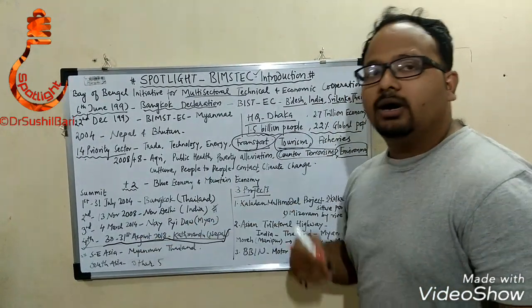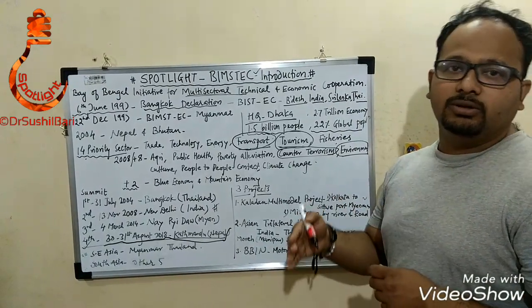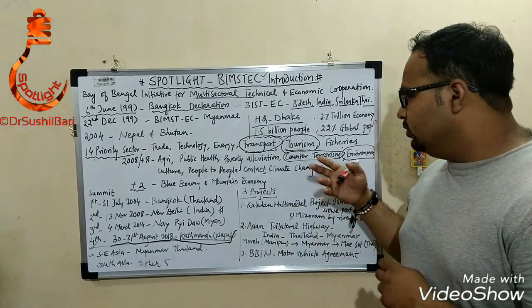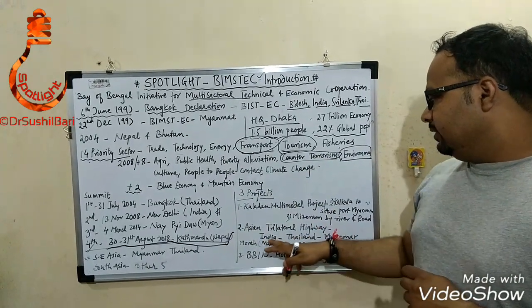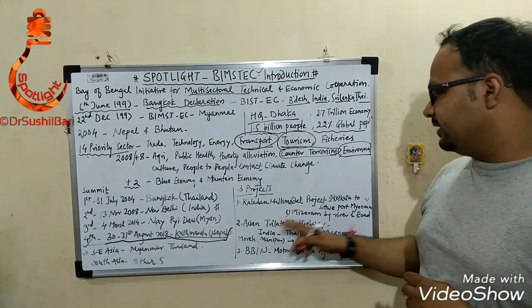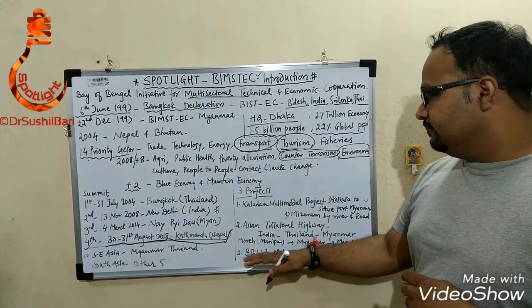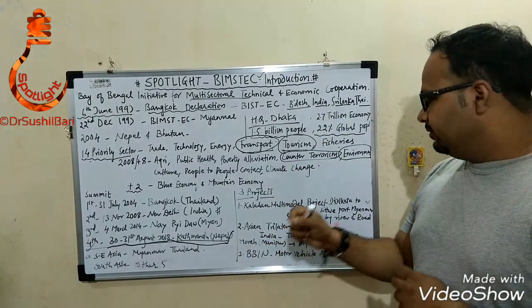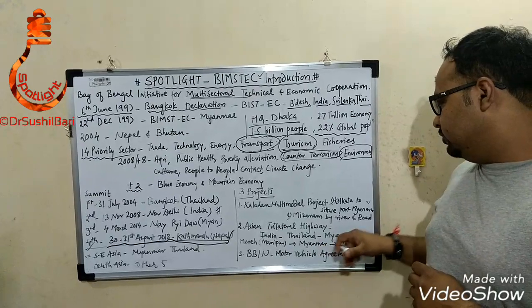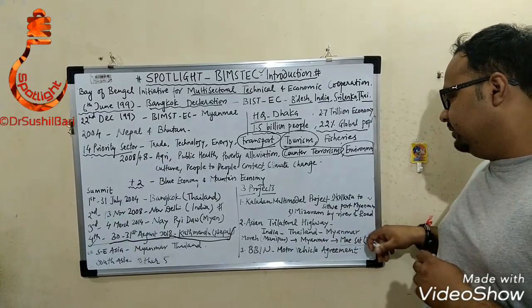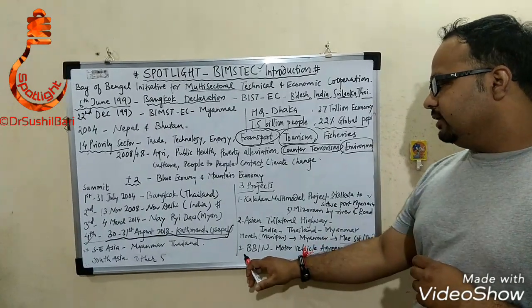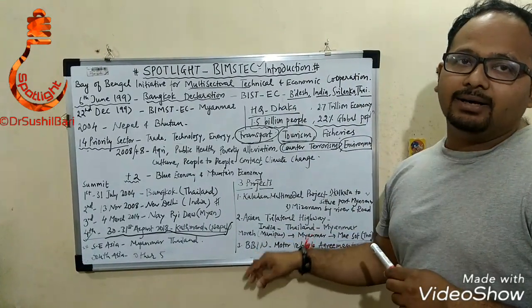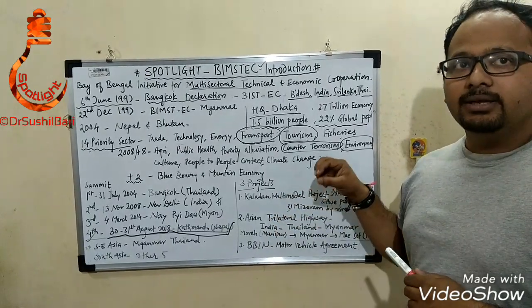At the fourth summit, the honorable Prime Minister also focused on connectivity — people-to-people connectivity and regional connectivity. For that connectivity, India, Thailand, and Myanmar are involved in the Asian Trilateral Highway, where Moreh in Manipur will be connected to Mae Sot, Thailand via Myanmar. The third initiative is BBIN — Bangladesh, Bhutan, India, and Nepal — which is a motor vehicle agreement.